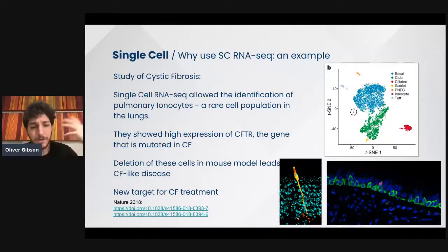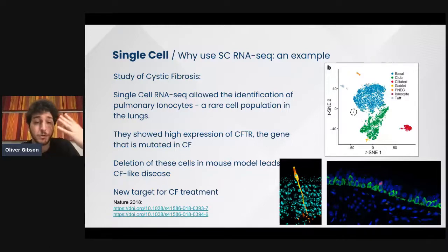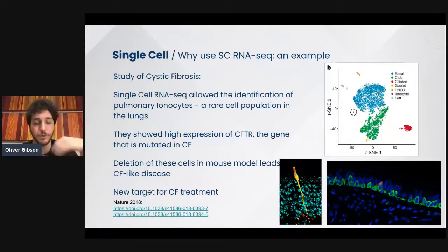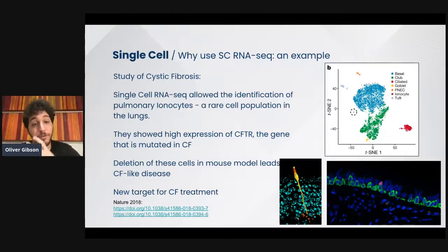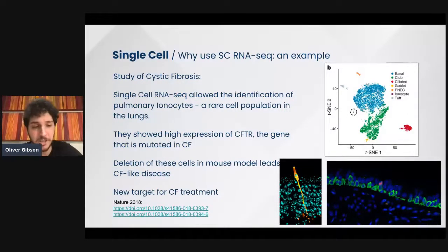The researchers studying cystic fibrosis decided to do a single-cell RNA-seq experiment to further analyze this disease. And what they found is that a rare cell population in the tissue that they were studying was expressing the CFTR gene.